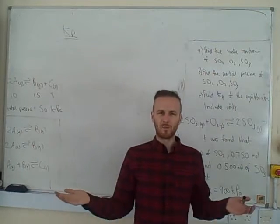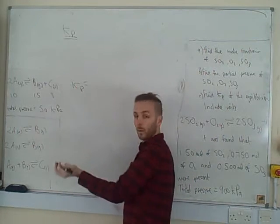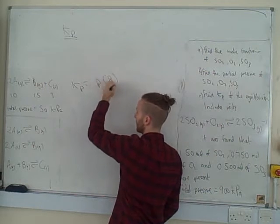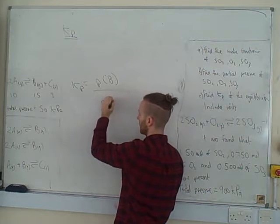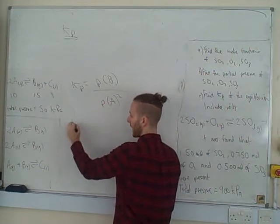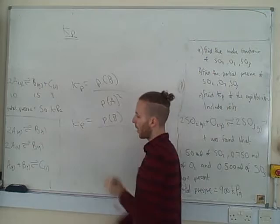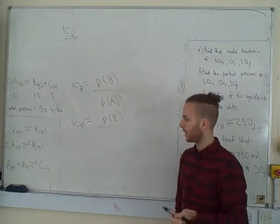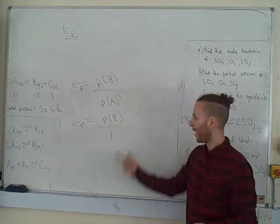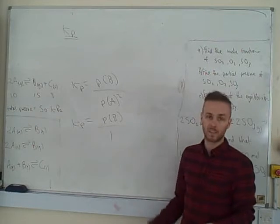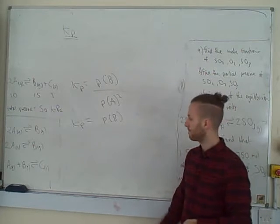For the first expression, KP equals the partial pressure of B divided by the partial pressure of A squared. For the second one, the reactants are all solids so we don't include them — we put the number 1 on the bottom, but anything divided by 1 is just itself, so you can essentially leave the denominator out, giving KP equals the partial pressure of B.